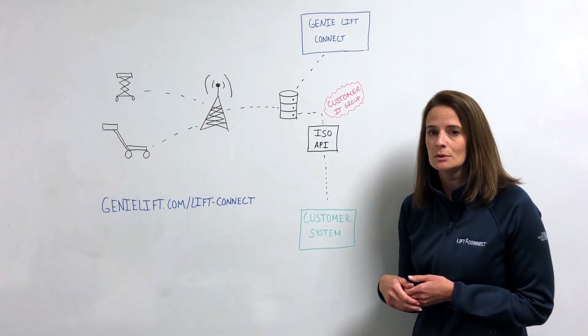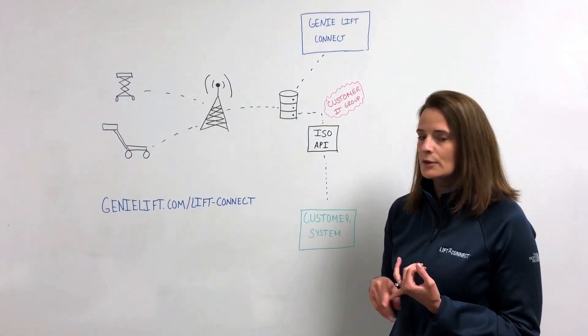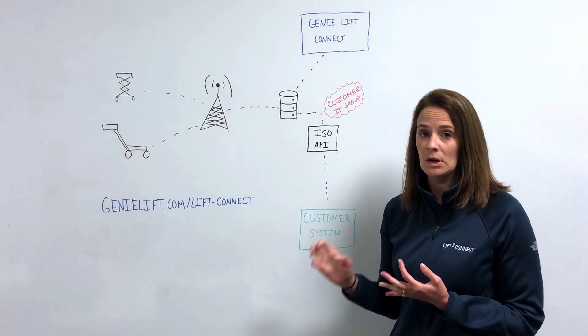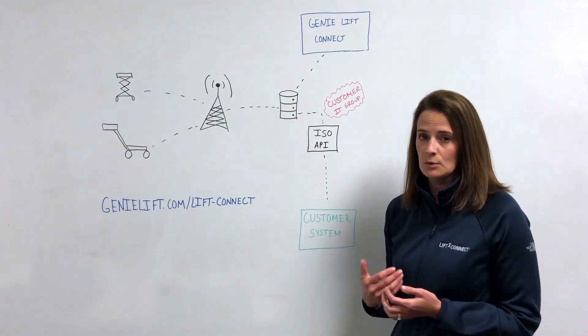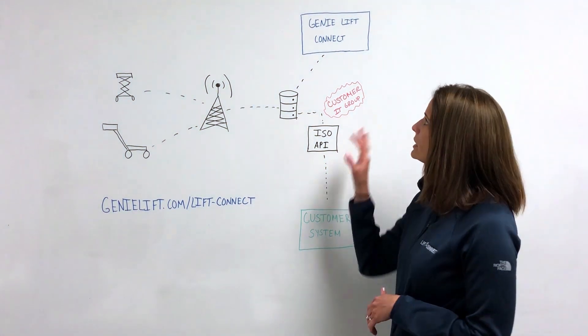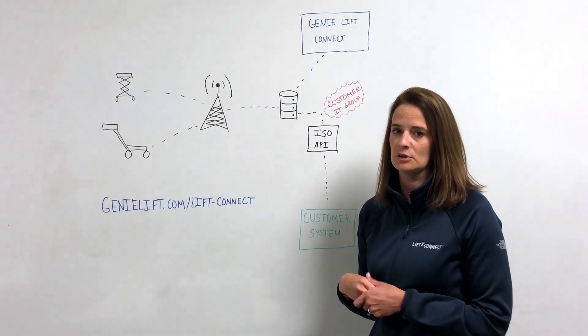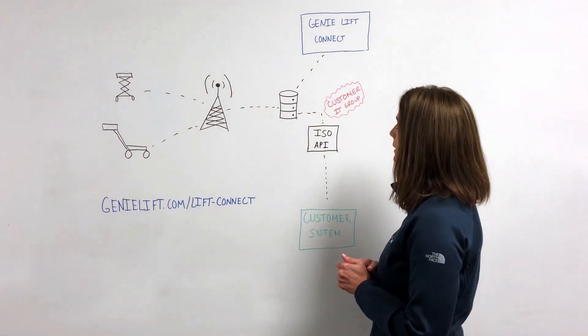This portal is a full-service tool that allows customers to access where their machines are on a map, what fault codes, if any, are appearing on them, when maintenance is due, and some basic reporting and dashboards. That's all available in the portal and comes standard with the three-year subscription with the LiftConnect program.